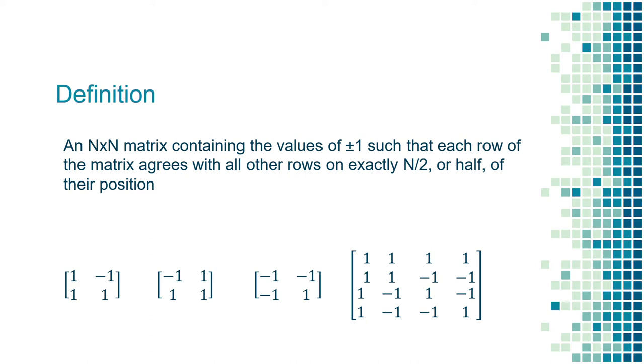First, we have a two-by-two Hadamard matrix 1, negative 1, 1, 1. As you can see, the matrix only contains values of either 1 or negative 1, and the rows only agree with each other on one value. That is, the first value of both rows are 1, so they agree with each other. However, the second value in the first row is negative 1, while the second value in the second row is 1, so they disagree with each other.